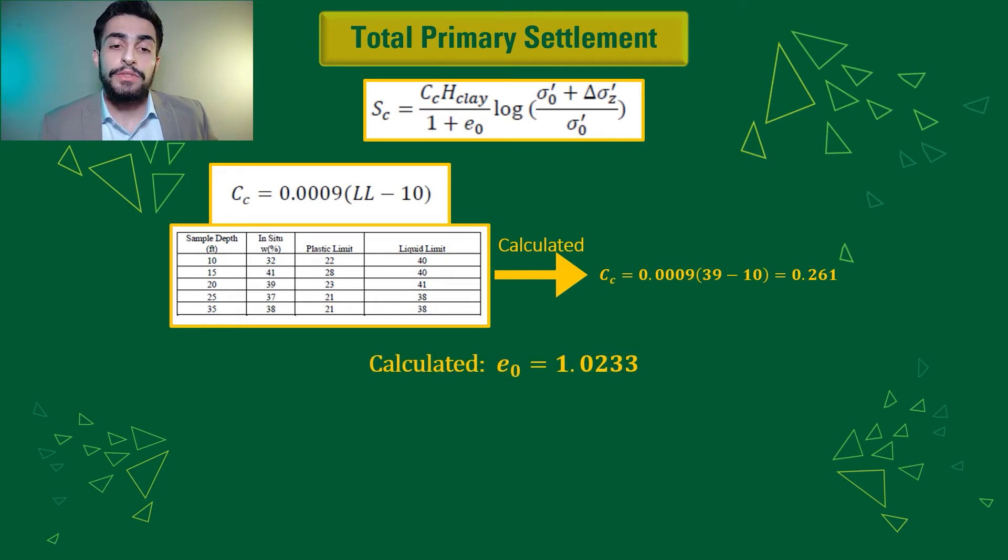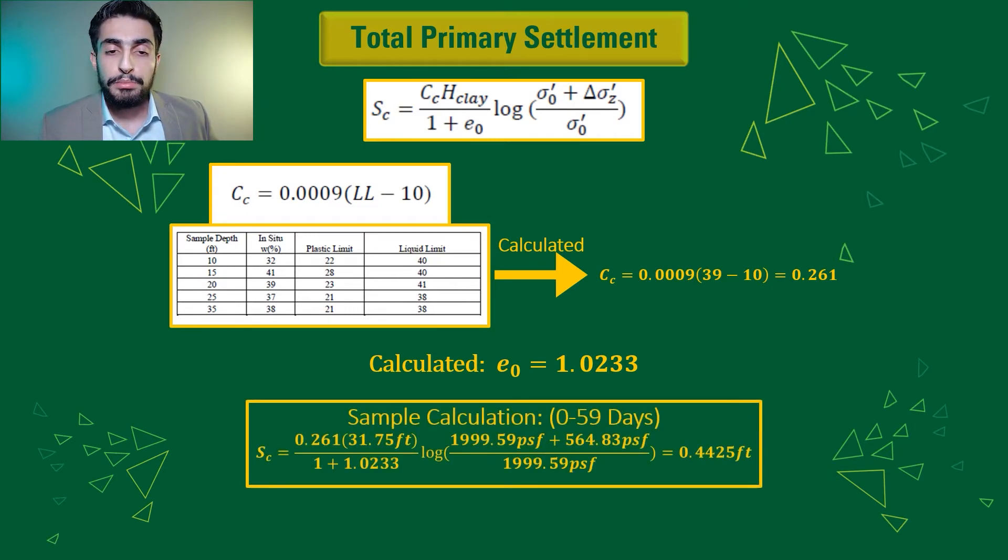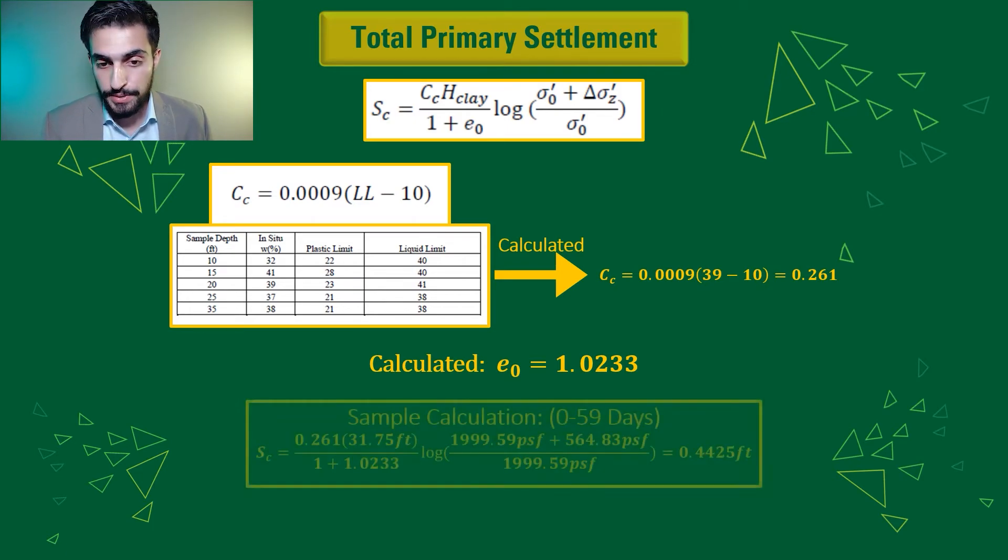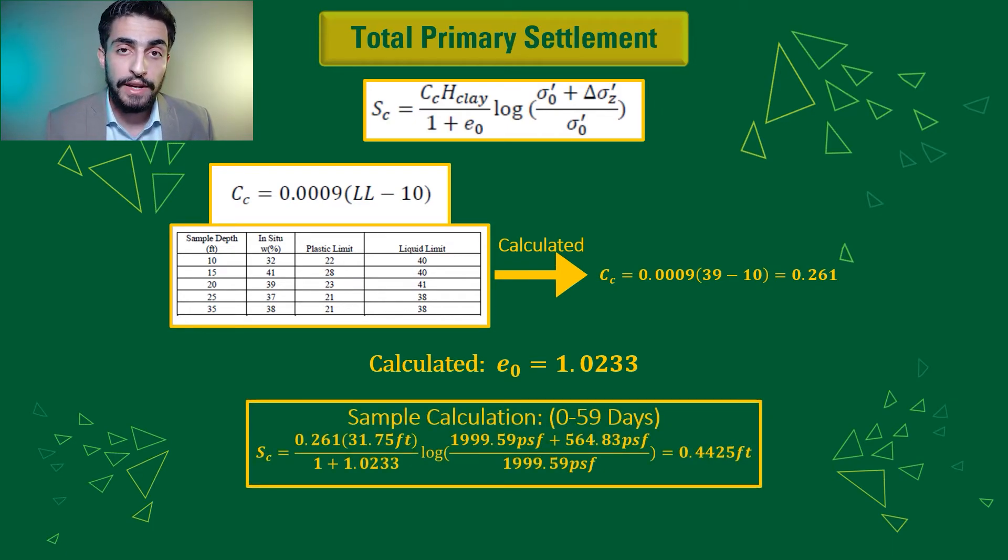And then we also calculated the initial void ratio of the soil to be 1.0233. And then plugging in all the information that we have in that settlement equation to give us a total primary settlement of the first period to be 0.4425 feet.